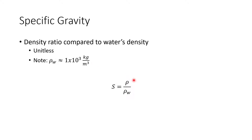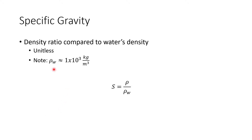Once you divide rho by another rho, the units cancel. So specific gravity is dimensionless. And naturally, if you try to find the specific gravity of water, it should be 1, because you're dividing rho-w by rho-w.